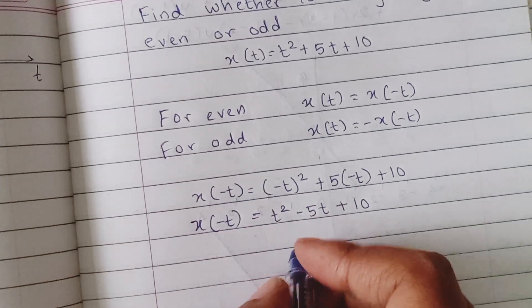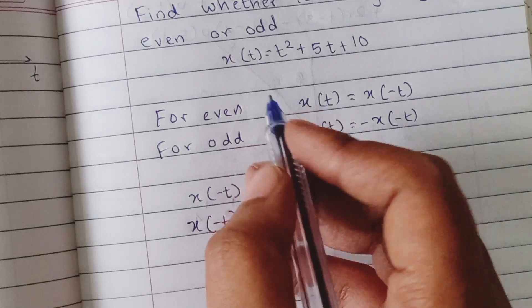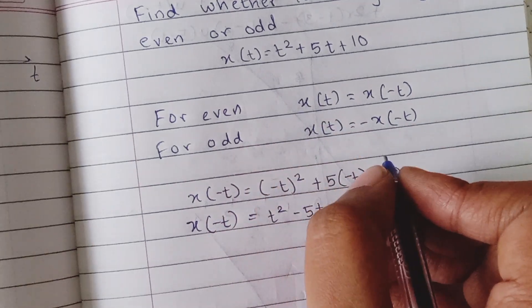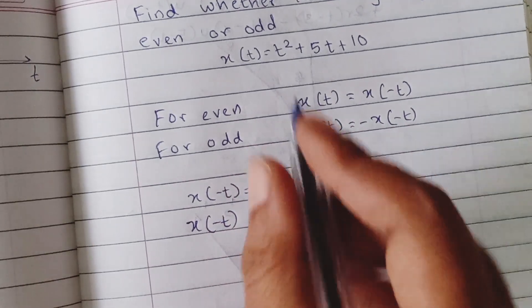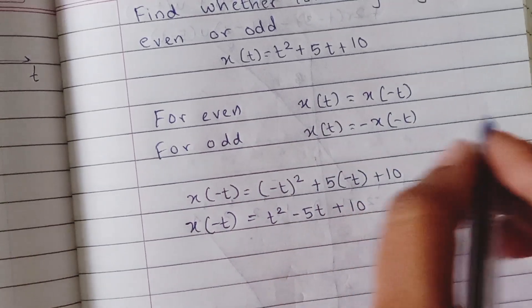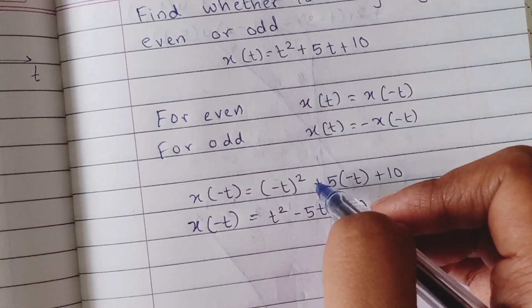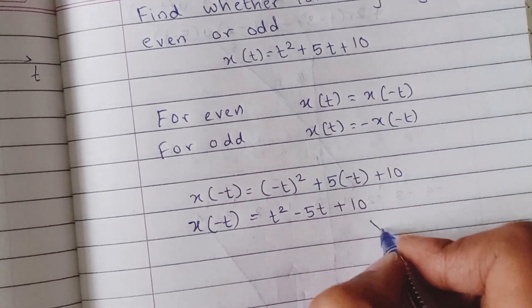Now if you see, ideally x(-t) should be equal to x(t) if we have to say that the signal is even. But if you compare both of these, because of the sign difference, it's not equal to x(-t). So it's not even.